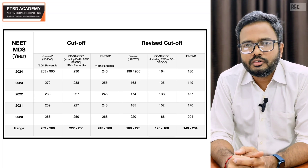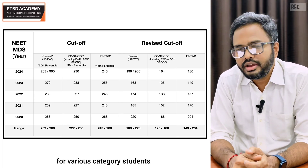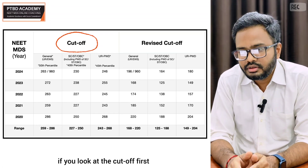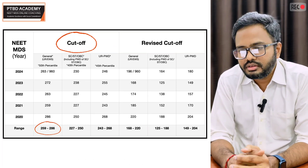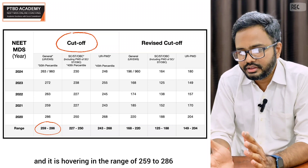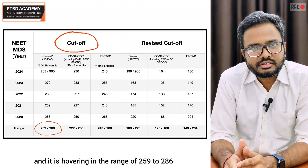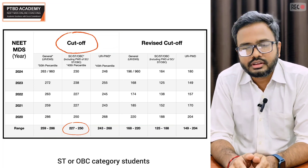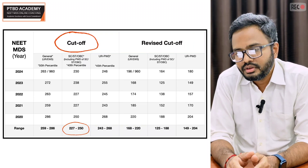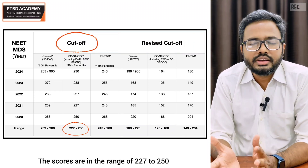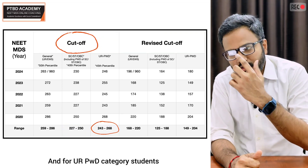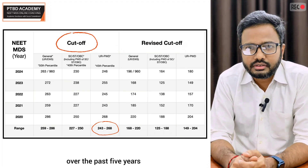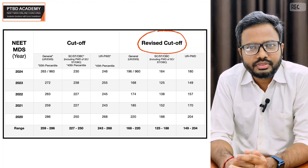This table gives you a detailed picture of how the cutoff scores have been over the past five years for various category students, from 2020 to 2024. For general category students the cutoff is the 50th percentile, with scores hovering around 286. For SC/ST and OBC category students it is the 40th percentile, with scores ranging from 227 to 250. For unreserved PWD category students it is the 45th percentile, with scores ranging from 243 to 268.